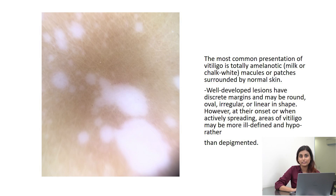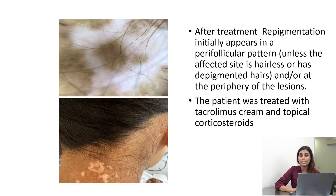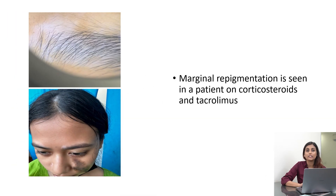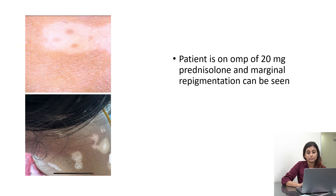If we give a vitiligo patient some treatment, there will be repigmentation in the vitiligo patch, and that repigmentation tends to occur in a particular fashion. For example, you can see in this figure that this patient who was given tacrolimus and corticosteroids had hyperpigmentation around the perifollicular area to begin with. You can also have pigmentation at the margins of the lesions — this patient was on prednisolone and we can see some marginal repigmentation here as well.